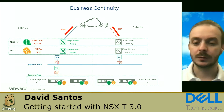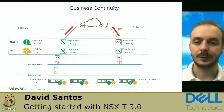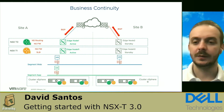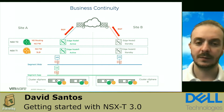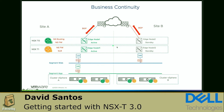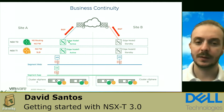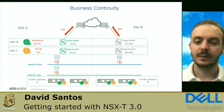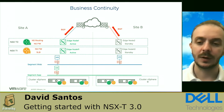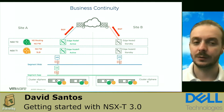We only need to do a vMotion to have that workload running in the other data center, and all network parameters like IP address, DNS entries, and DFW rules will be maintained in the second data center. For north-south traffic, we're using an active-standby setup with an edge node for T0 active in site 1 and a standby node in site B. This requires a maximum latency of 10 milliseconds between sites. Otherwise, we need to provide other kinds of strategies for north-south traffic.